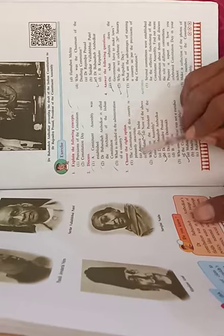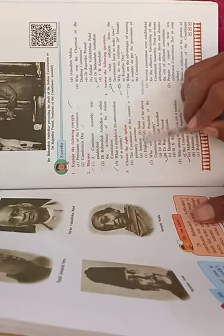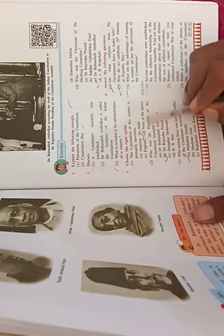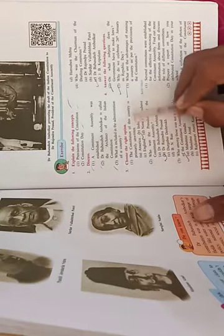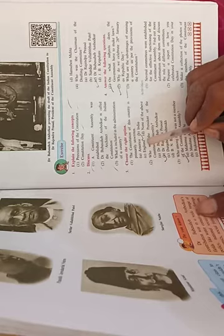Question three: Choose the right option. The constitution of this country is primarily unwritten. Options: America, India, England, and none of the above. The correct answer is England. The constitution of this country is primarily unwritten in England.